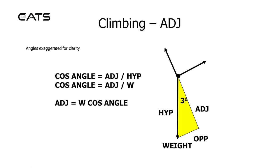Similarly, the adjacent side can be found using cosine of the angle equals adjacent over hypotenuse, where the hypotenuse is weight. So cosine angle equals adjacent divided by weight, which rearranged becomes adjacent equals weight cosine angle. Adjacent is the force opposing lift, which is weight cosine angle.